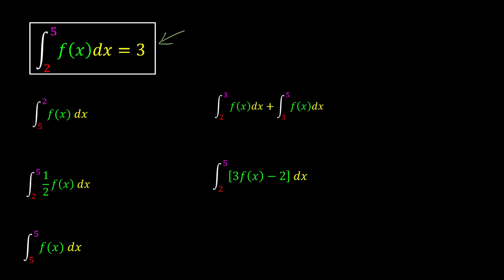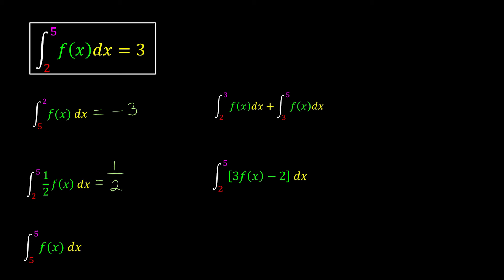We're given information that allows us to find the integration from 5 to 2. The upper and lower limits have been swapped — swapping limits gives the opposite sign — so the answer is negative 3. For the next part, there is a constant one-half in front, so we take it out: one-half times the integration from 2 to 5 of f(x) dx. Since that integral equals 3, the answer is one-half times 3, which is 3 over 2.